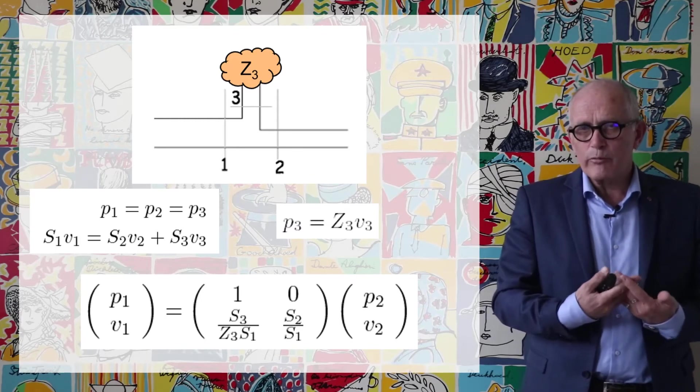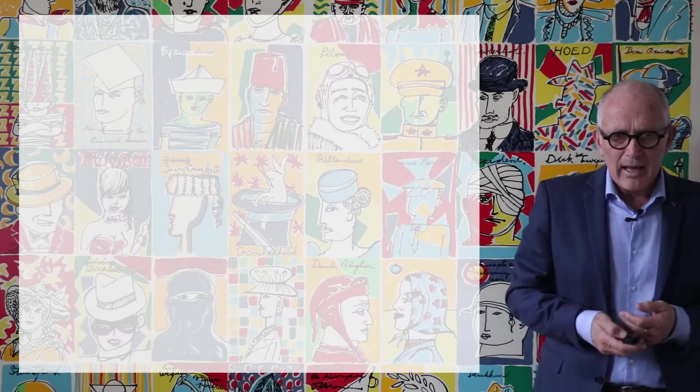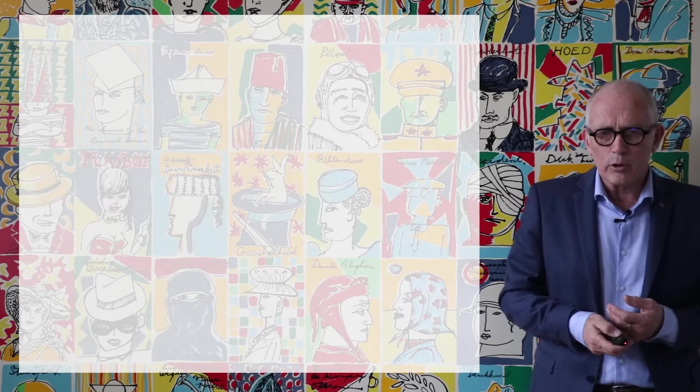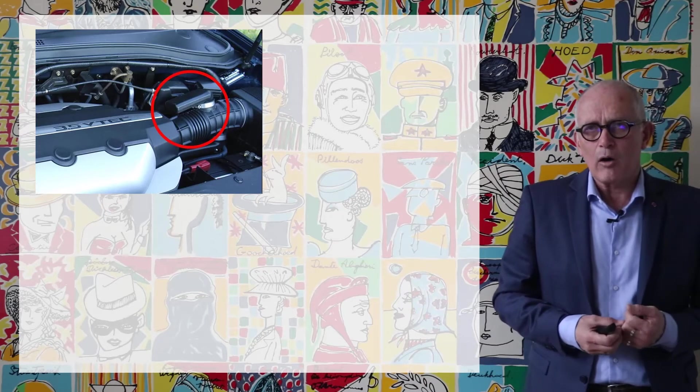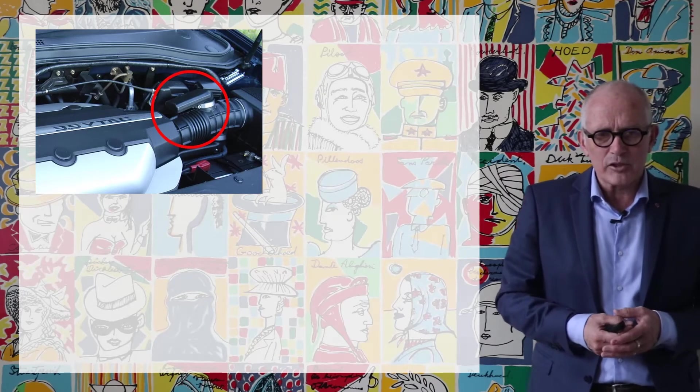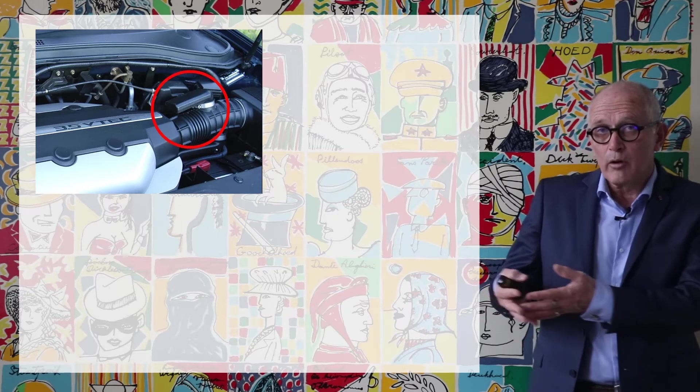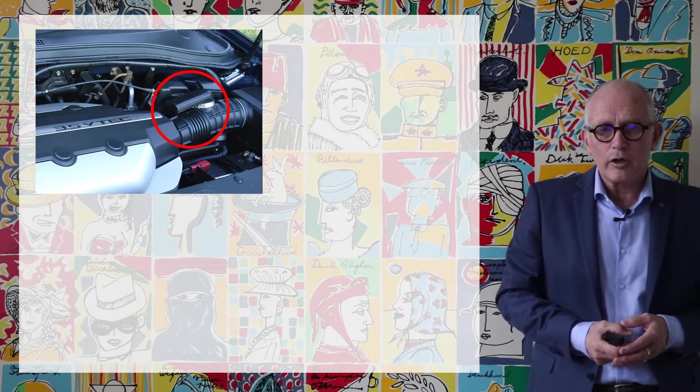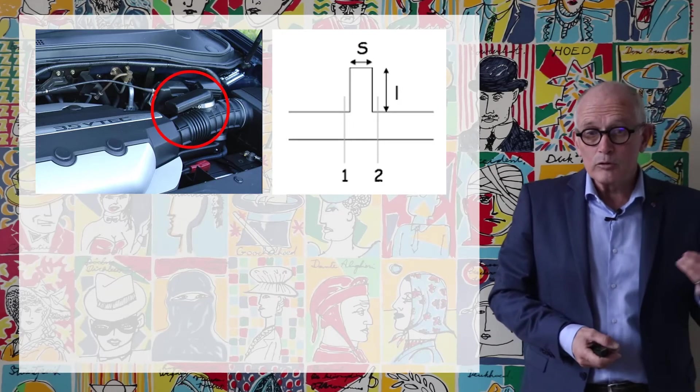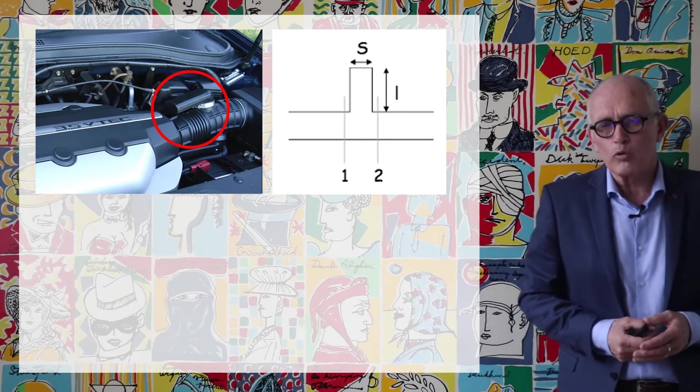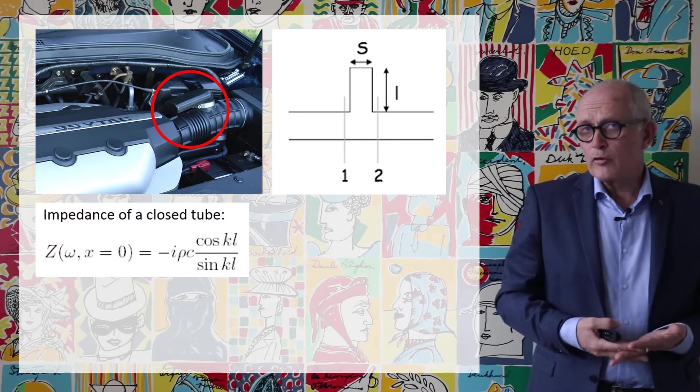So we have a very general formula that of course we have to apply to practical cases. And one practical case is the following. If you look under the hood of an engine you very often see components like these on the intake or air admission system. So we just have the main sound waves going through this very large duct but we have one part that will go through that little duct that is closed on one side and that is called a quarter wavelength resonator.